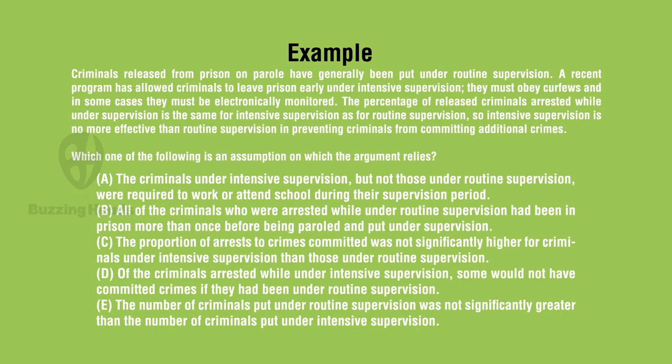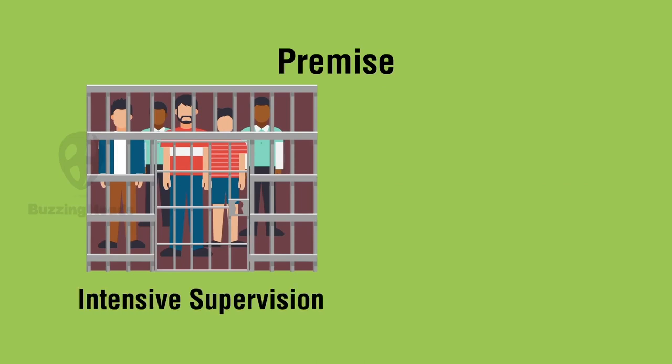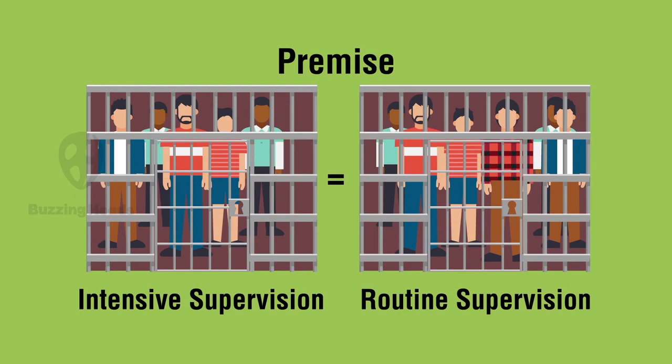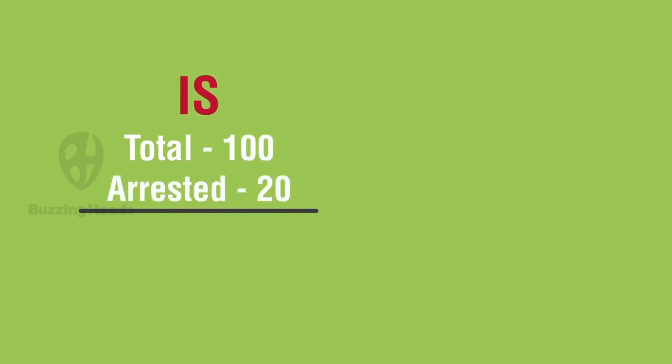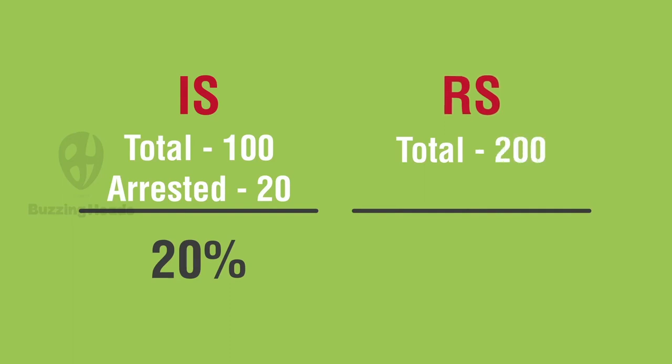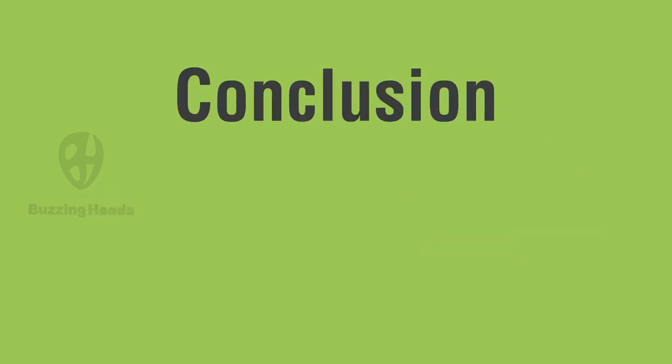Let's solve the next question. Please pause the video for 2 minutes and play when you are ready. Let's follow our process. Read, conclude, pause, eliminate. Premise. The percentage arrested under intensive supervision is equal to the percentage arrested under routine supervision. Example, total people out on IS is equal to 100, arrested is equal to 20, so it is 20 percent. Total people out on RS is equal to 200, arrested 40, so it is again 20 percent. What's the conclusion?